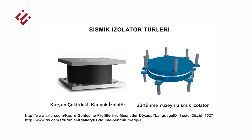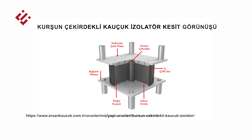Bunlar kurşun çekirdekli kauçuk izoratör ve sürtünmeli sarkaç tipi izoratördür. Kurşun çekirdekli kauçuk izoratörler, üst üste yerleştirilmiş kauçuk ve çelik tabakaların ortasına konulan bir kurşun çekirdekten oluşur. Bu kompozit yapıda kauçuk sismik izoratörün yatay rijitliğini kontrol ederken kurşun çekirdek enerji sönümleme kapasitesini belirler.